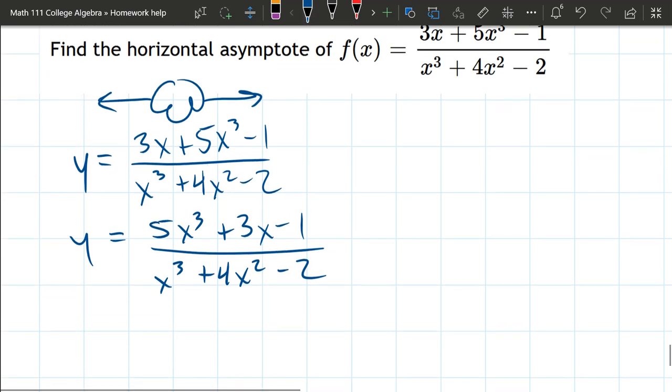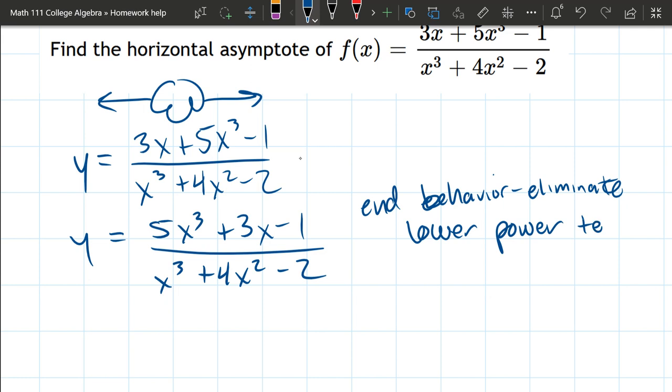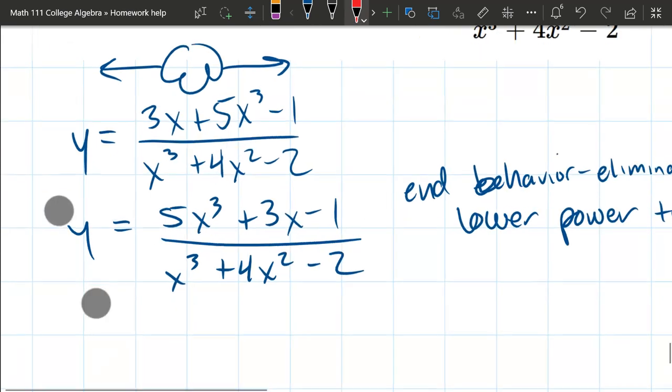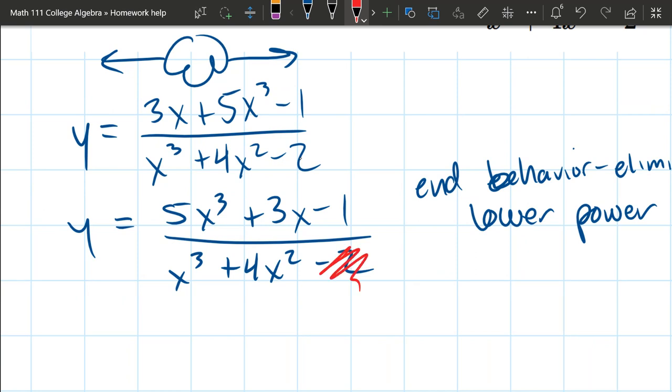All right, end behavior, we're going to eliminate. We're going to eliminate the lower power terms. Let's go and just take them out. So that minus 2 is low power. When I say low power, x cubed is the highest power in the denominator. So this other minus 1 won't matter.